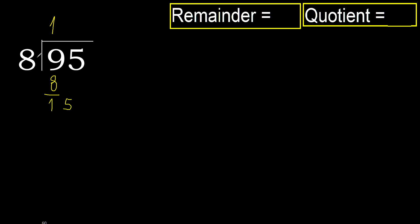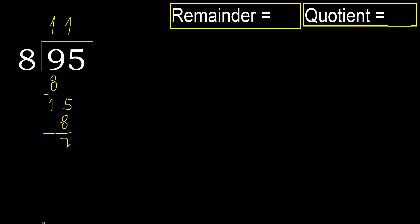Now working with 15. 8 multiplied by 2 is 16, which is greater. 8 multiplied by 1 is 8, which is not greater. Subtract. 7 remains. There are no more digits to bring down.